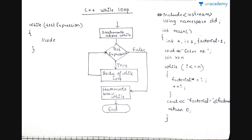Here is an example of while loop for factorial of a number. The update expression is ++i, the test condition is i <= n, and the code factorial *= i is the body. This is evaluated until the condition fails, then the factorial of the number is printed.